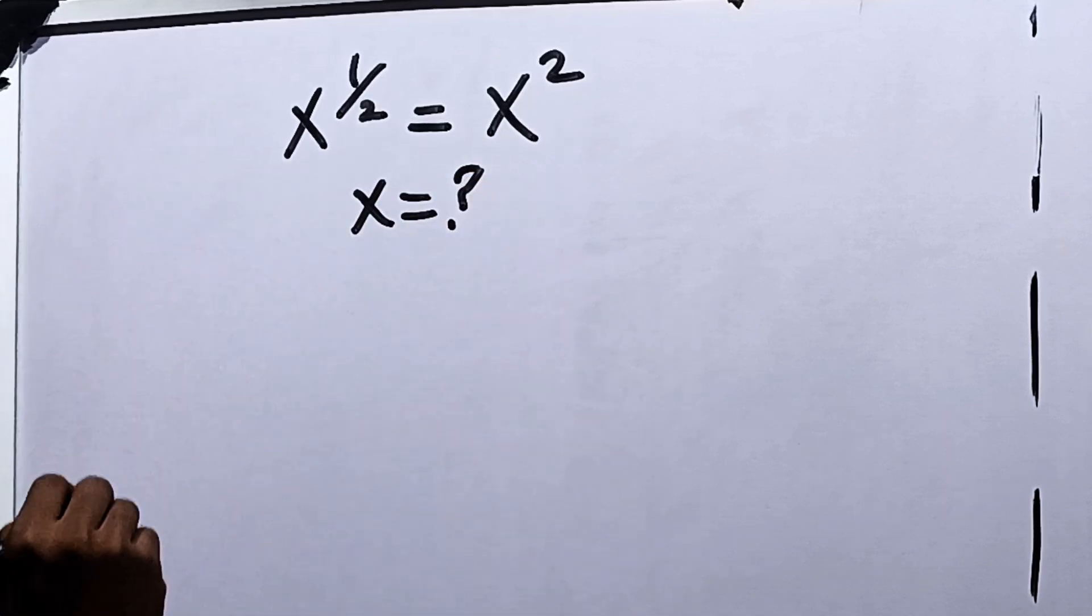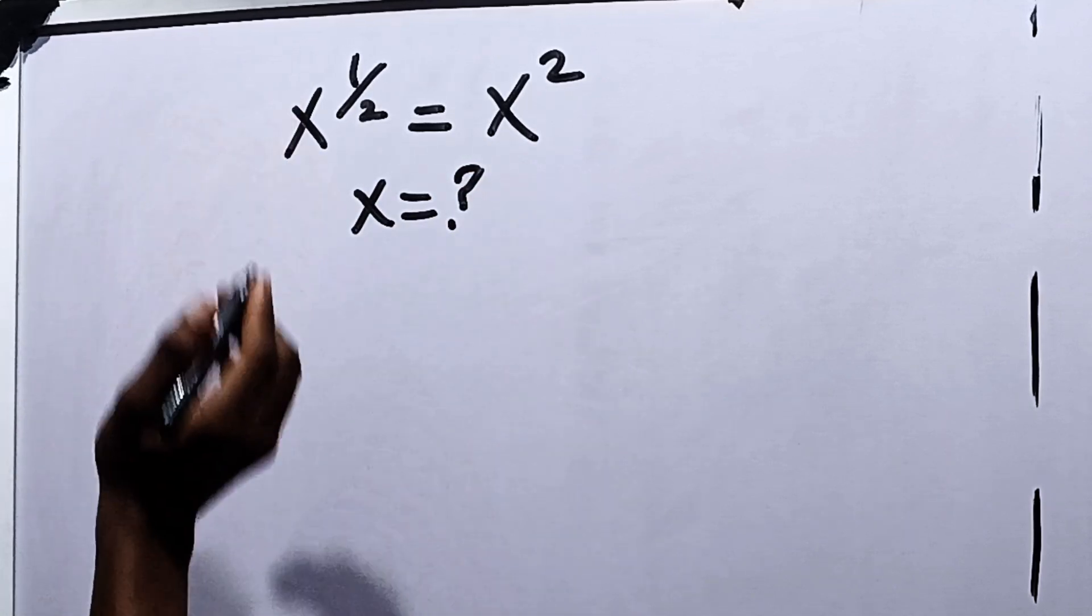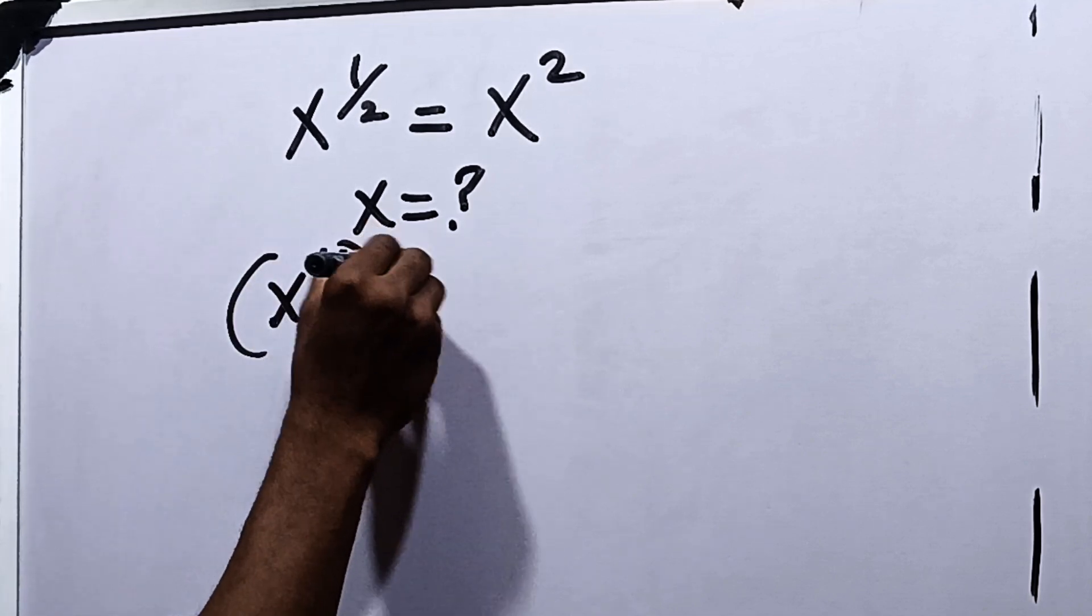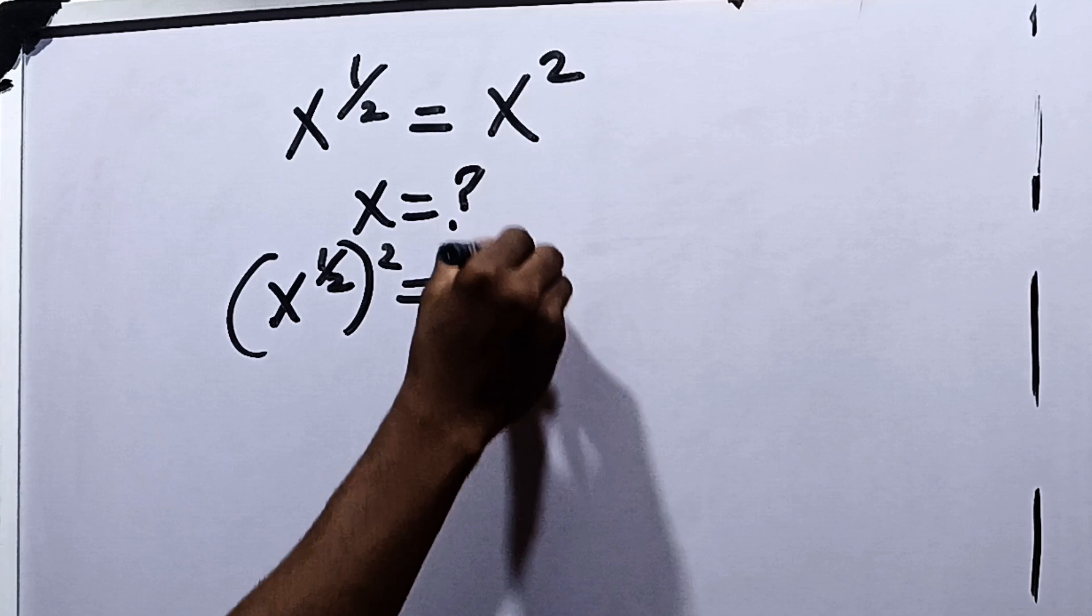First things first, we can say let's square both sides. So we have x raised to the power half raised to the power 2 or squared is equal to x squared squared.